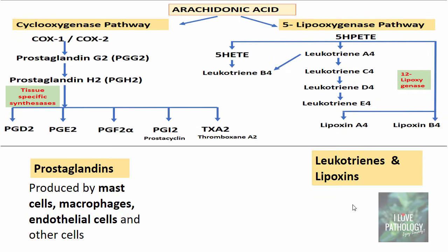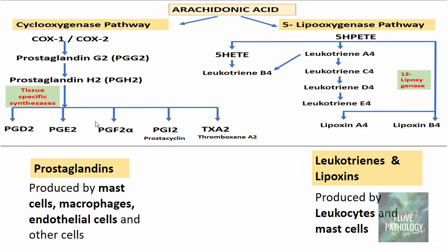Prostaglandins are produced by mast cells, macrophages, endothelial cells and other cells. Not always is arachidonic acid metabolized via both pathways in every cell. There are some cells where cyclooxygenase enzymes are predominant, and some where lipoxygenase enzymes are predominant. That is why prostaglandins are synthesized by mast cells, macrophages and endothelial cells where cyclooxygenase enzymes are more numerous, while leukotrienes and lipoxins are produced by leukocytes and mast cells where 5-lipoxygenase enzymes are more predominant.